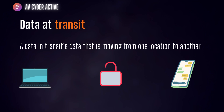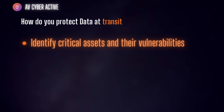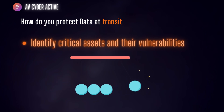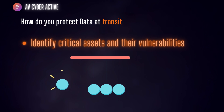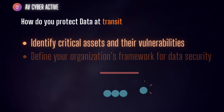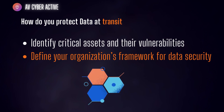This makes data in transit a prime target for attack. To protect it, first identify critical assets and their vulnerabilities — identify which assets have data in motion and patch any vulnerabilities by following your organization's vulnerability management and patch management policy. Next, define your organization's framework for data security, which might include technologies like an HSM (Hardware Security Module) to protect data in transit and apply the correct keys and policies.